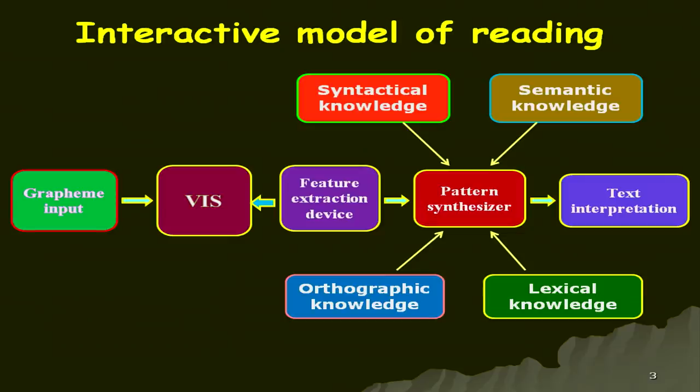There are several models of reading and the famous ones are the top-down model and the bottom-up model. But the interactive model of reading, given by Rimmelhardt in the 1970s, talks about various other things — not only the top-down and bottom-up models, but some other processes as well. It is a combination of all the processes that have been discussed in both models.